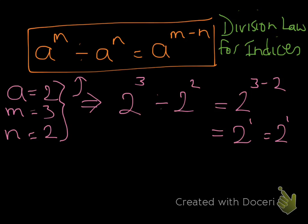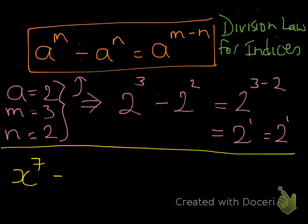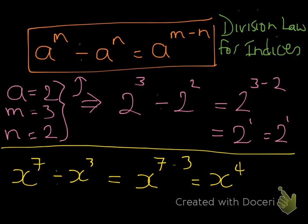This is really important — particularly when you're adding and subtracting indices using the multiplication and division laws, especially where you've got variables. When there is a variable or value with no power shown, the power is always 1. For example, using a variable: x to the power of 7 divided by x to the power of 3. Using our rule, the base stays and we subtract the powers: 7 minus 3 gives x to the power of 4. It really is that straightforward.